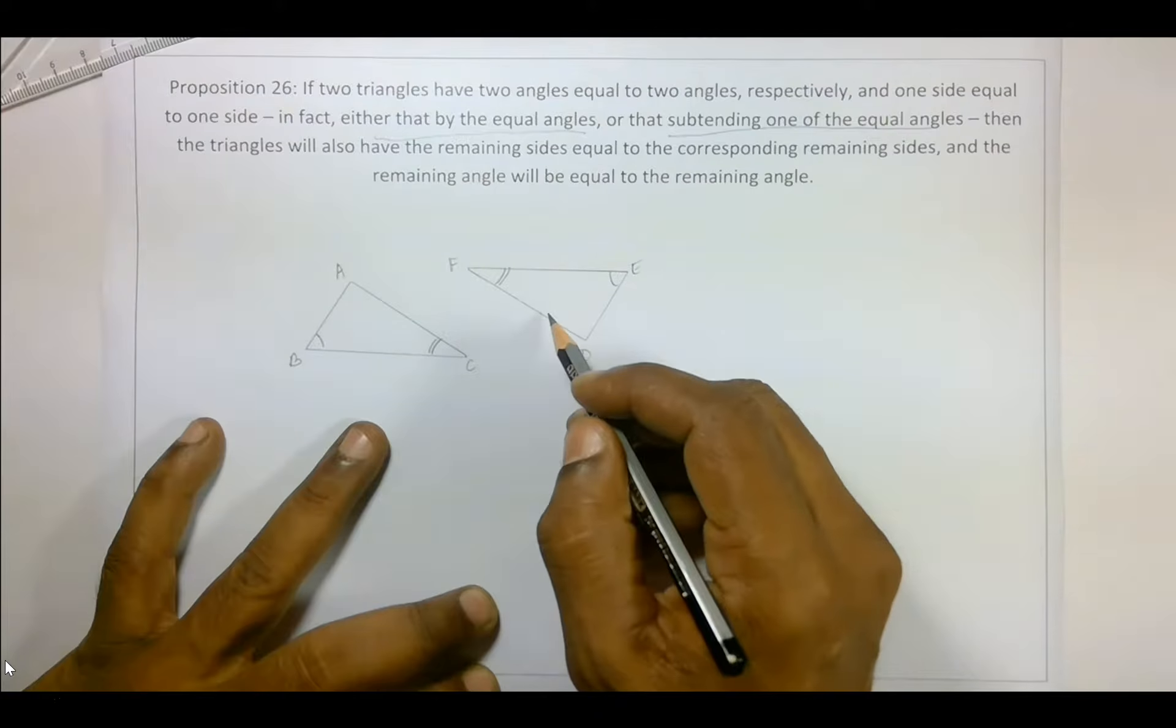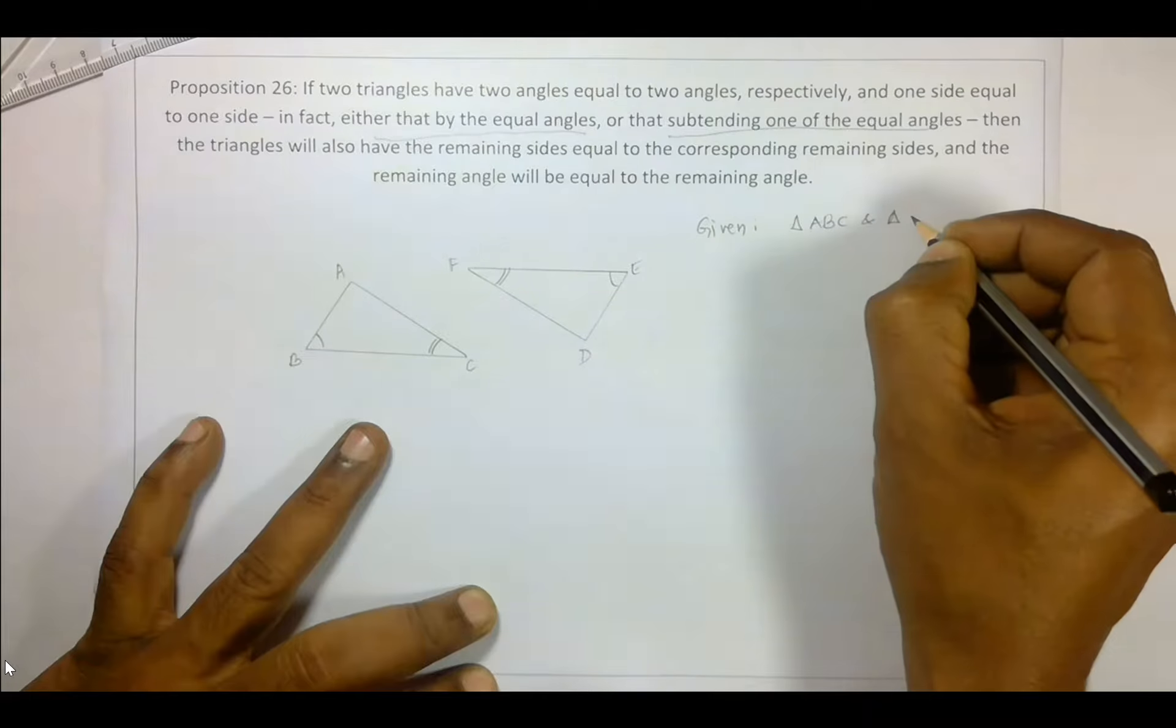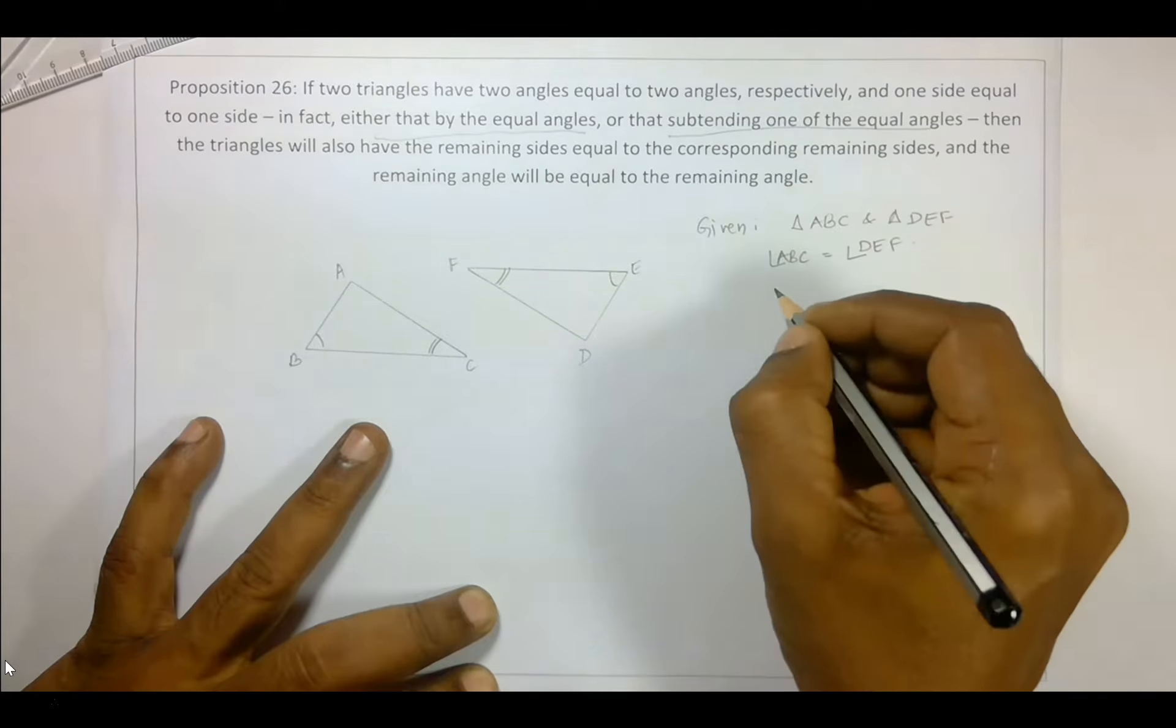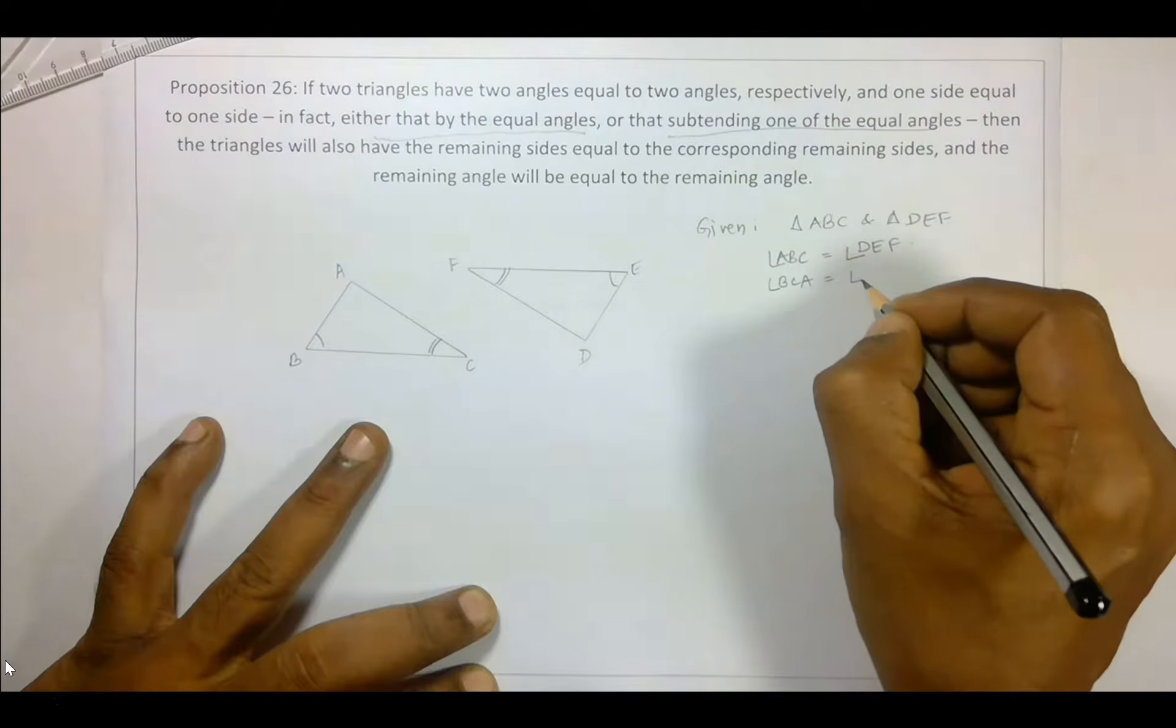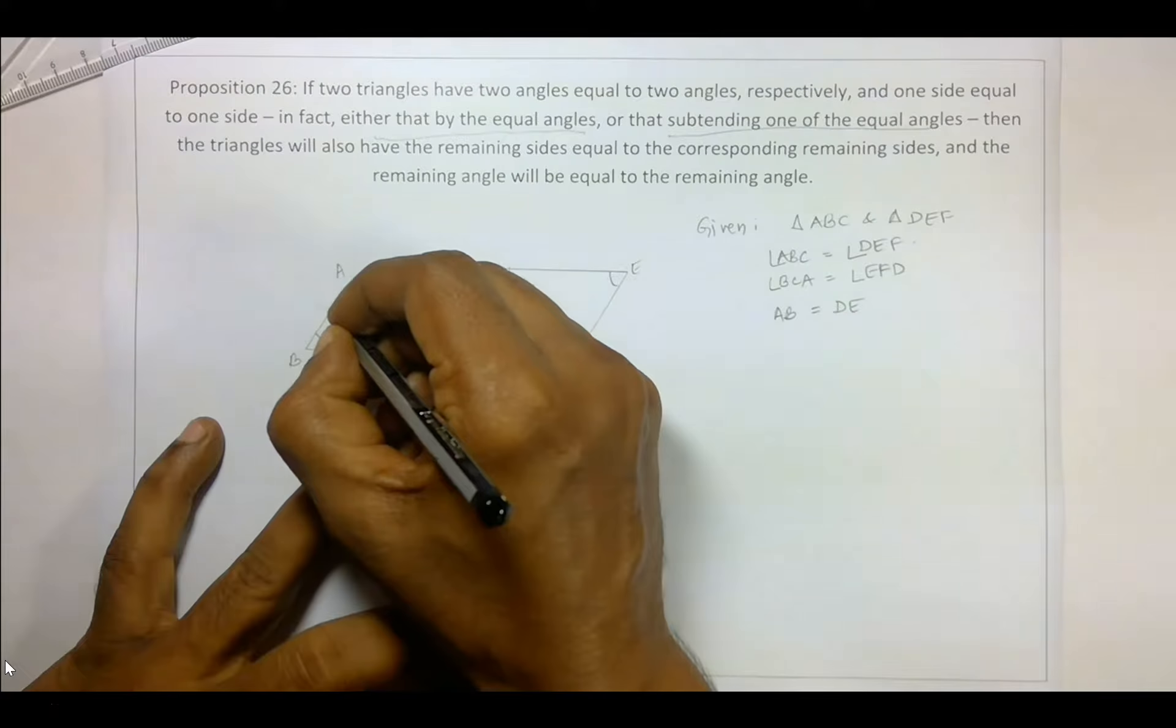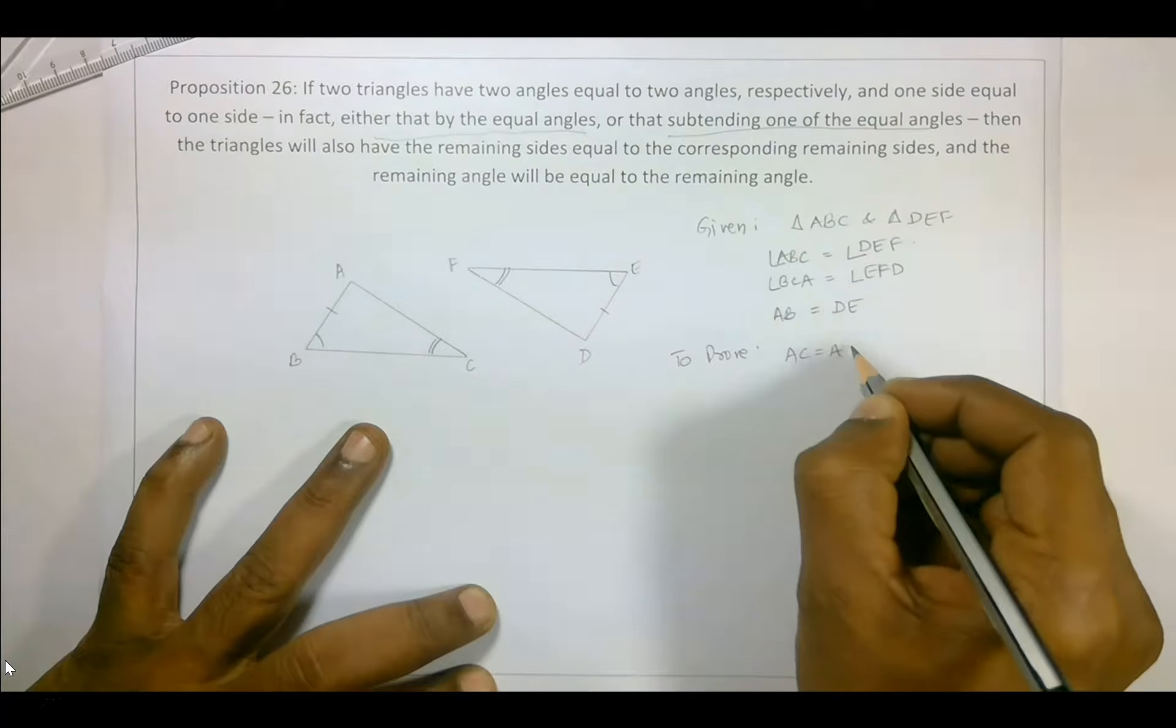Given is triangle ABC and triangle DEF. Angle ABC is equal to angle EFD, and AB is equal to DE.